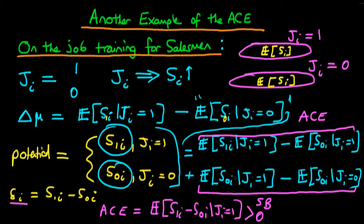How about the selection bias effect? The first expression is the expected level of sales of an individual had they not received on-the-job training, given that they chose to receive it, compared with the expected level of sales of someone in the group who didn't decide to have the training. It's probably the case that people most interested in their career and developing well in their work life are those most likely to choose on-the-job training — they're probably the people that would have done well regardless. So this first term is likely bigger than the second, meaning the selection bias effect is likely greater than zero.